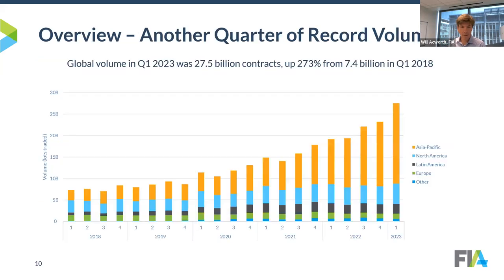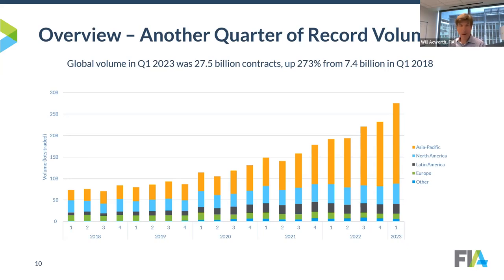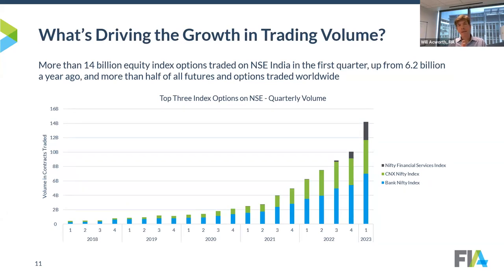Looking back over five years, we've seen one quarter after another of record volume, though it's pretty much concentrated in Asia Pacific. The light blue bar representing North America has actually been growing quite well too — if it weren't for the extraordinary Asia Pacific growth, we'd all be celebrating an amazing rate of growth in North America. The number one driver, overwhelming almost everything else, is the National Stock Exchange of India. This growth rate is just unprecedented in 20 years of looking at these markets, even surpassing the KOSPI 200 index options growth of years ago.